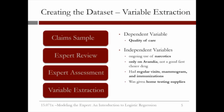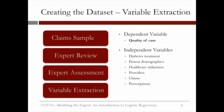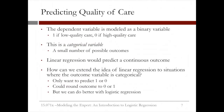The dependent variable was modeled as a binary variable: one for low quality care and zero for high quality care. This is, by its nature, a categorical variable that only takes two possible values. We have seen linear regression as a way of predicting continuous outcomes. We could use linear regression here, but then we'd have to round the outcome to zero or one. Instead, in this lecture we will explain how to use logistic regression, which is an extension of linear regression to environments where the dependent variable is categorical.